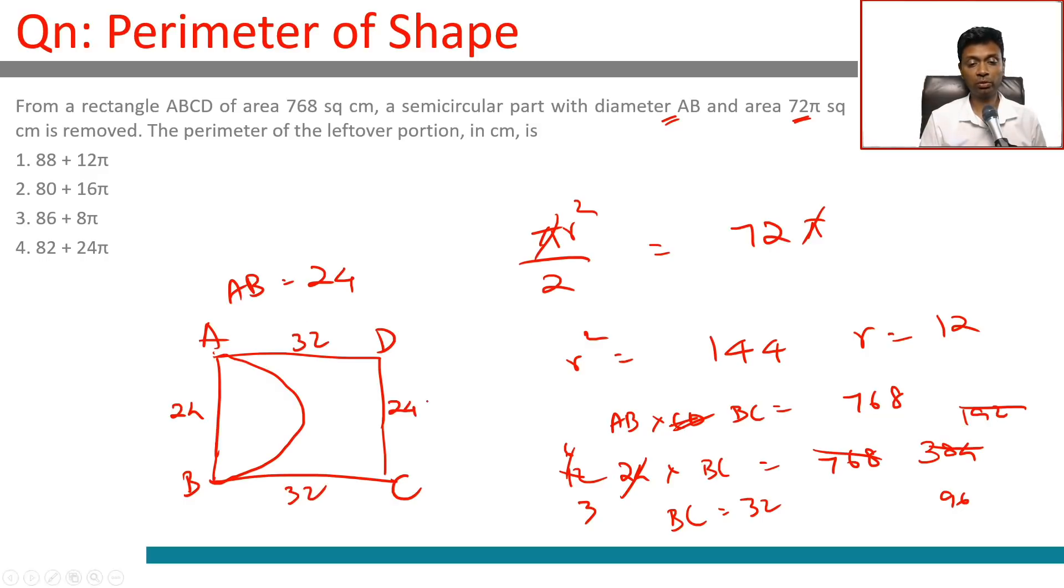This side is 32, this is 24. Now we want to find the perimeter of the leftover portion.